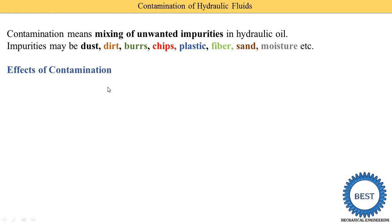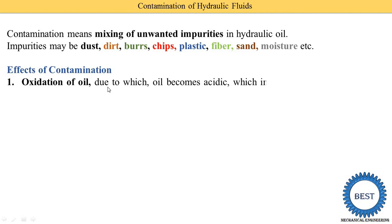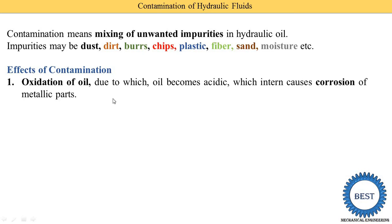The first effect of contamination on hydraulic oil is oxidation of oil, which makes the oil acidic, and this in turn causes corrosion of metallic parts. The unwanted impurities cause the oil to react with oxygen, converting it to an acidic state, and this acidic hydraulic oil corrodes the metallic parts of the hydraulic system.